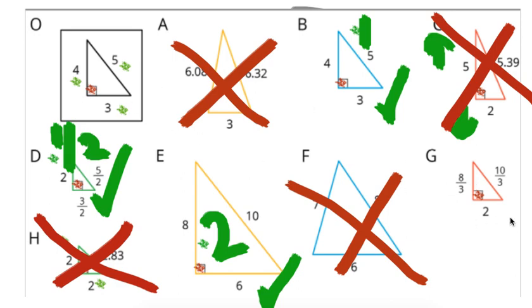So 3 has gone down to 2. 4 has gone down to 8 thirds, which would be the same as 2 and 2 thirds. So it's gone down. And 5 has gone down to 10 thirds, which is also going down. So the question is, how much down did we go?